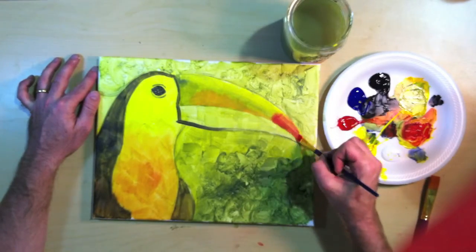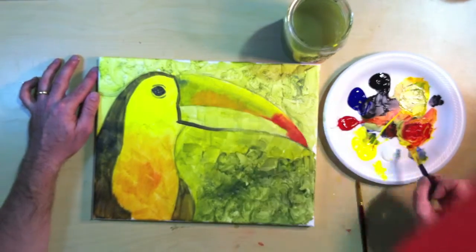Toucan's beaks have a little bit of red on the tip so I'll put the red on the tip. You'll see a little bit more orange up on the beak.